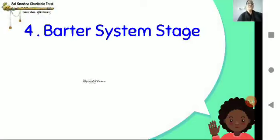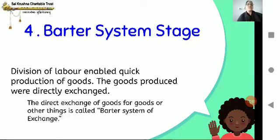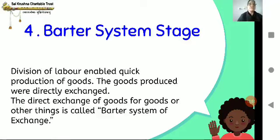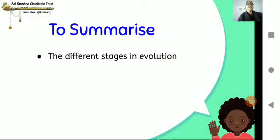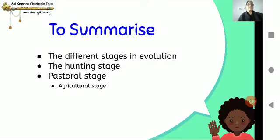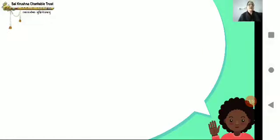The next is the barter system stage. Division of labor enabled quick production of goods, and the goods produced were directly exchanged. The direct exchange of goods for goods and other things is called the barter system of exchange. This was the fourth stage. To summarize, the different stages in evolution are: the hunting stage, pastoral stage, agricultural stage, handicraft stage, and barter stage.